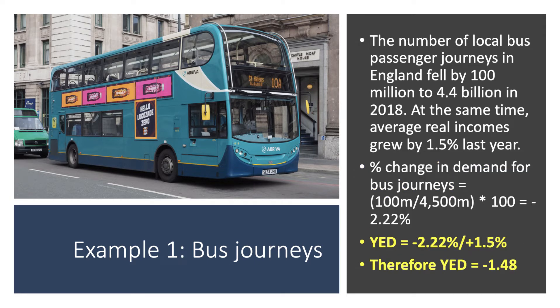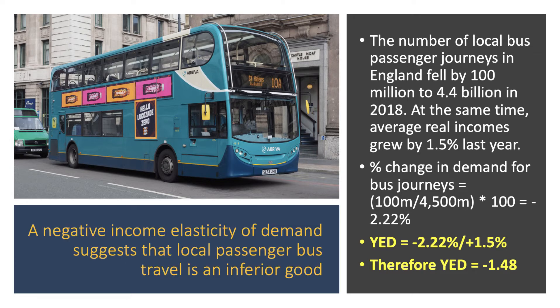We need to calculate the income elasticity of demand and comment on the nature of bus journeys as a service. Incomes changed by plus 1.5%. For bus journeys, they fell by 100 million to 4.4 billion, so there must have been 4.5 billion in 2017. The percentage change is minus 100 over 4,500 times 100, giving minus 2.22%. Income elasticity is therefore minus 2.22 divided by plus 1.5, giving a negative income elasticity of minus 1.48.